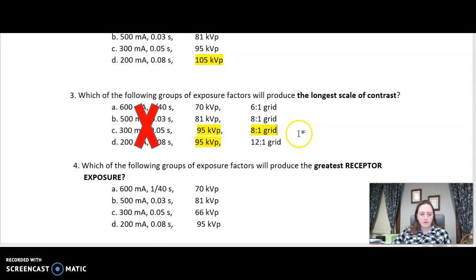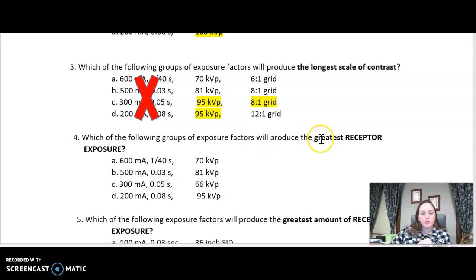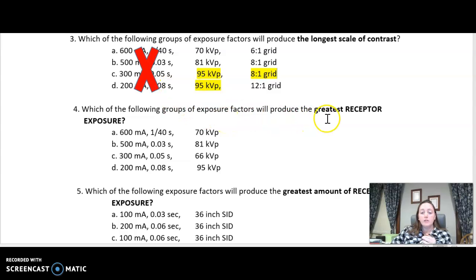Now, moving on. I know I'm going fast. Sorry. Greatest receptor exposure. So what is the controller for receptor exposure? What's your primary controller for receptor exposure? MAS. You are correct. So for these, you have to calculate out the MAS. So you have to do the MA times time. And I'm going to tell you what these are because three are the same and one is different. So these three answers come out to 15. The last answer comes out to 16. Greatest receptor exposure means highest MAS. The highest MAS, the highest receptor exposure. So my answer is four because that's my highest MAS.